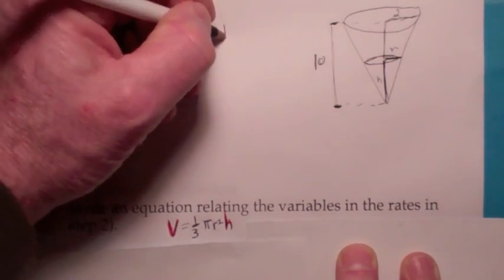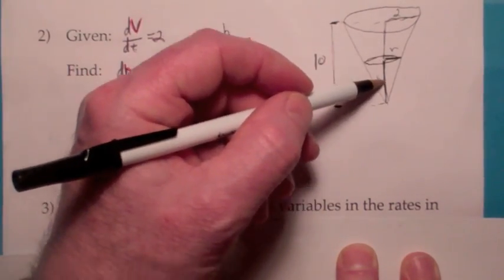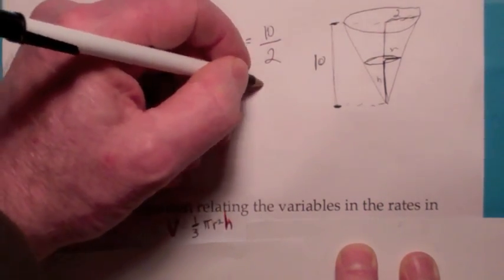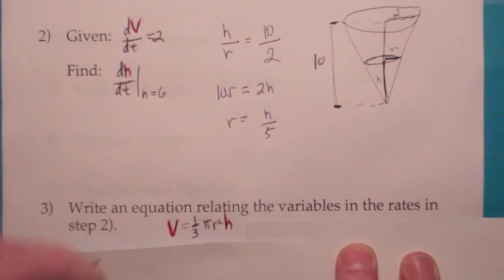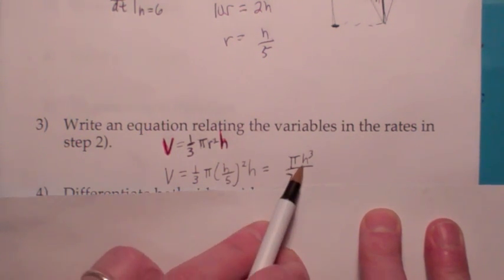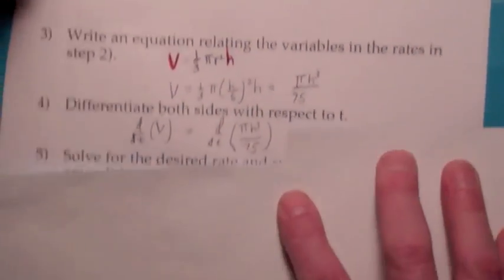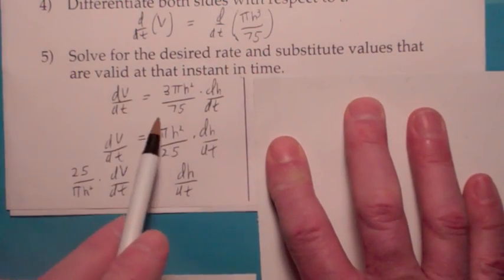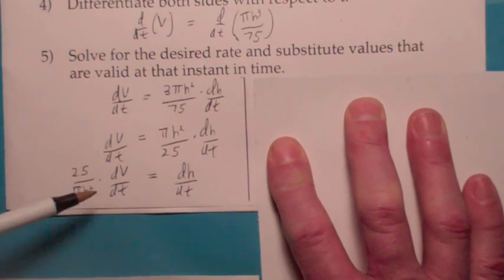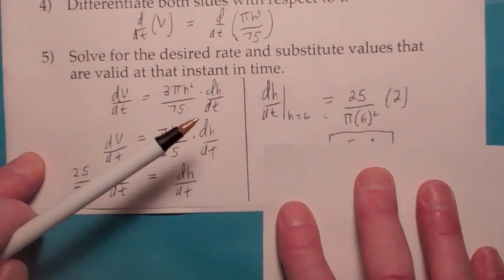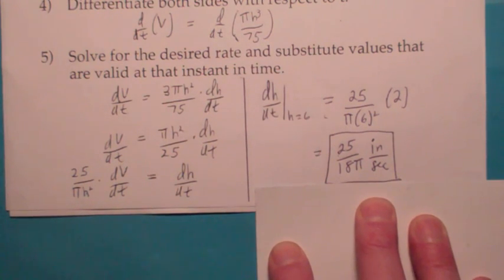You march back to the volume equation and replace r with h/5. When you multiply it out, you get V equals πh³/75. Differentiate both sides with respect to t: you get dV/dt equals 3πh²/75 times dh/dt. We're trying to solve for dh/dt, so multiply by the reciprocal. Plug in h equals 6, and simplify — you get 25/(18π) inches per second. I would call that a similar triangle type, since we used similar triangles.